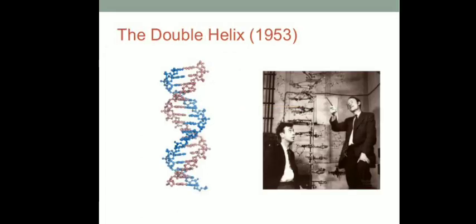Here you can see the double helix structure of DNA which was proposed by Watson and Crick in the year 1953. Both strands are coiled in a right-handed helical fashion, in which the two strands are antiparallel: one strand is oriented in the 5' to 3' direction, and the other strand is in the 3' to 5' direction.